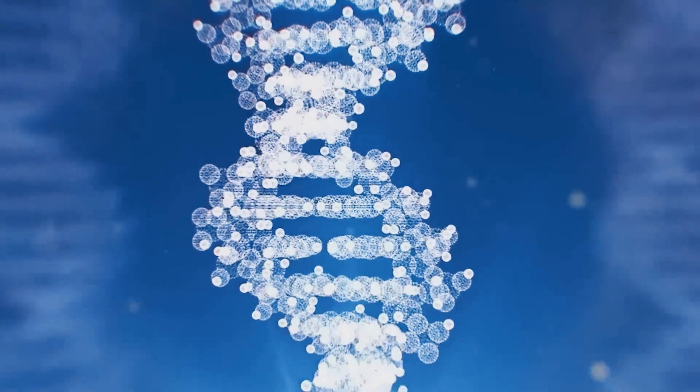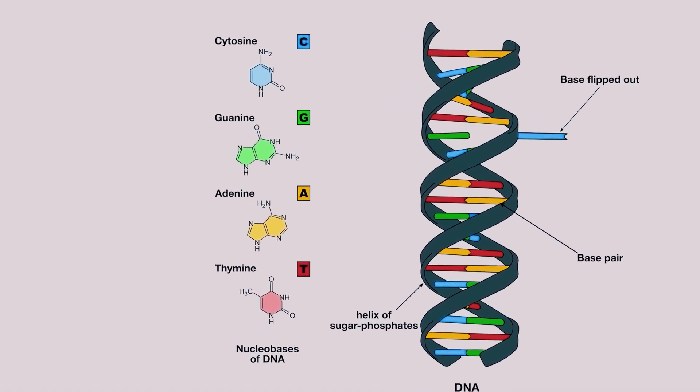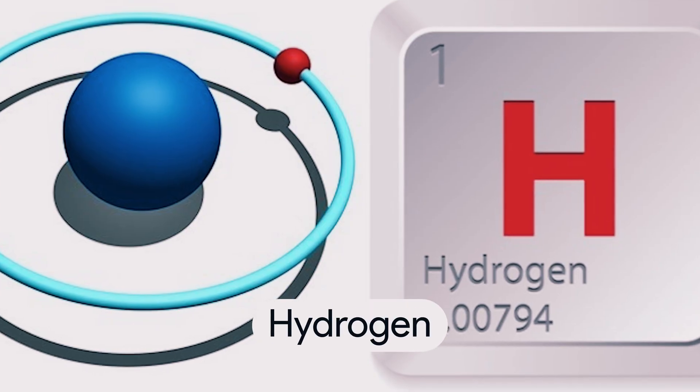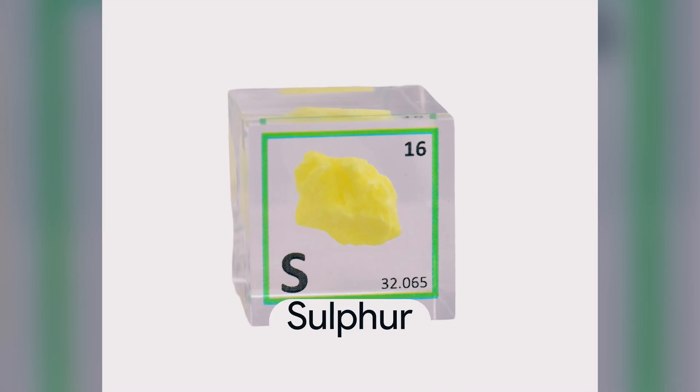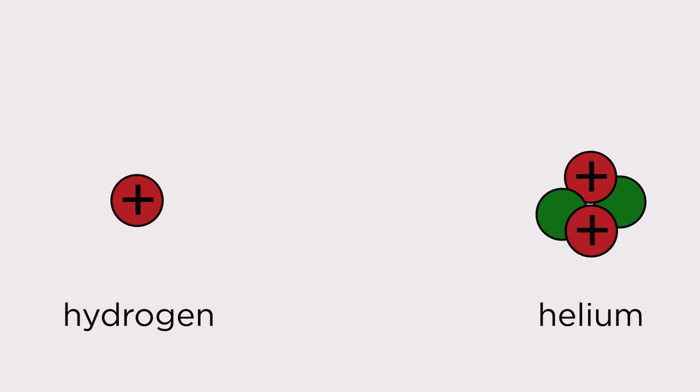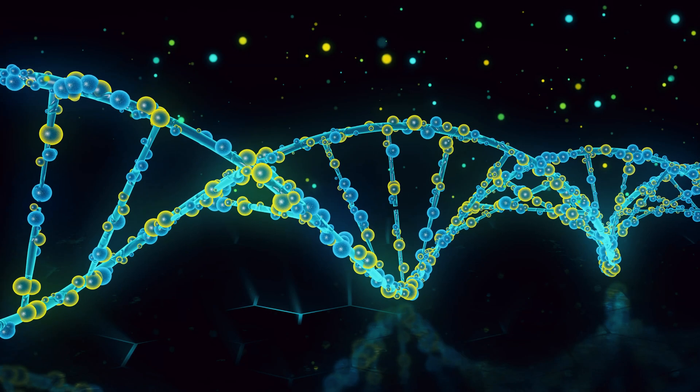Another important property of carbon is its ability to easily form bonds with other elements, such as hydrogen, oxygen, nitrogen, and sulfur. These elements are also essential for life, and when they are combined with carbon, they create a variety of molecules that serve various biological functions.